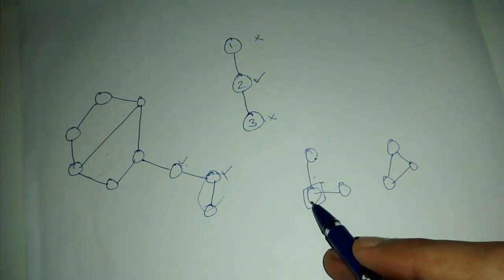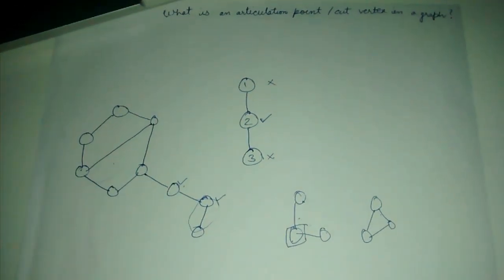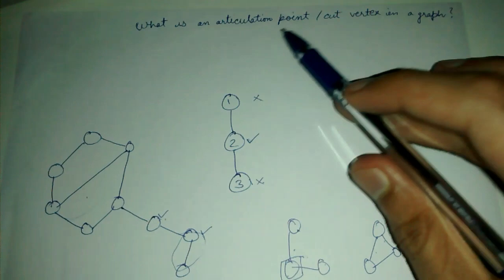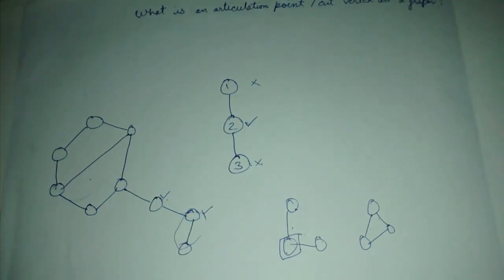So this is a cut vertex. There is no other cut vertex as you can see. So cut vertex, this is the definition of cut vertex or articulation point in a graph. Hope you understood. Thank you friends, please like, share, and subscribe.